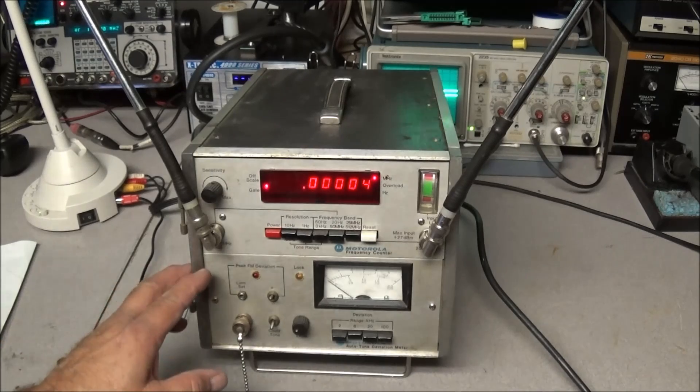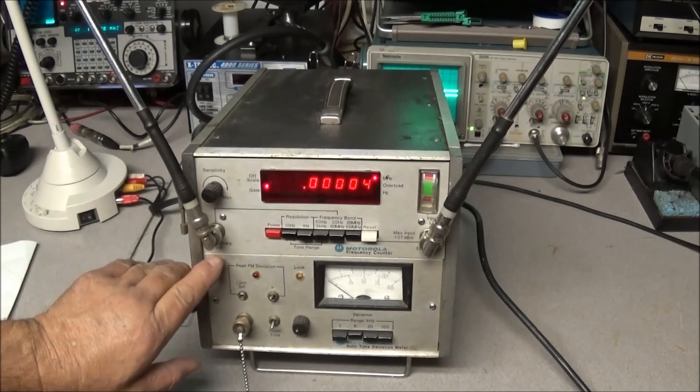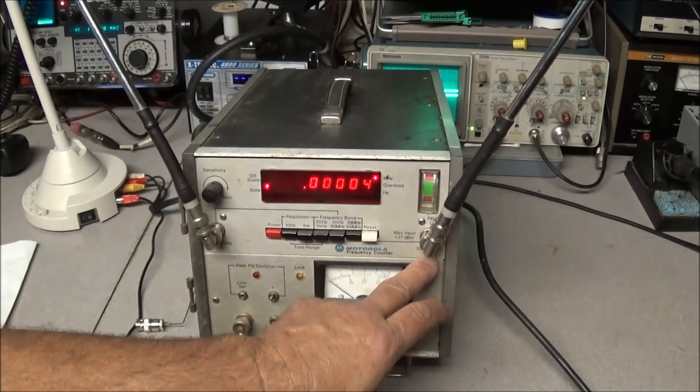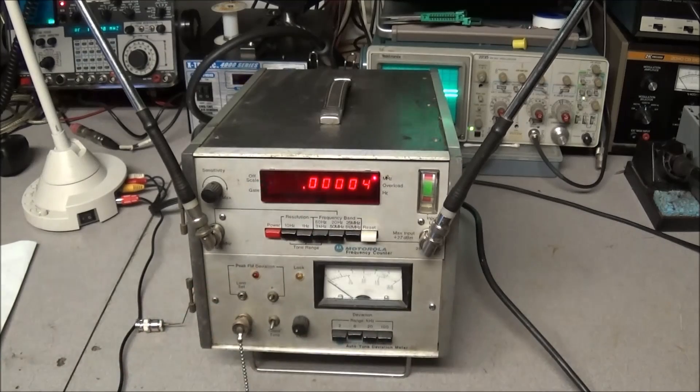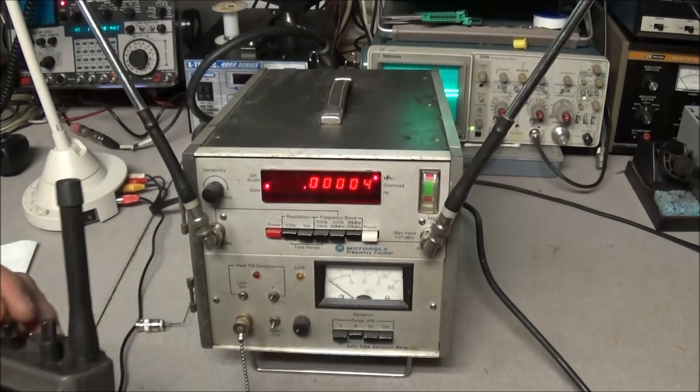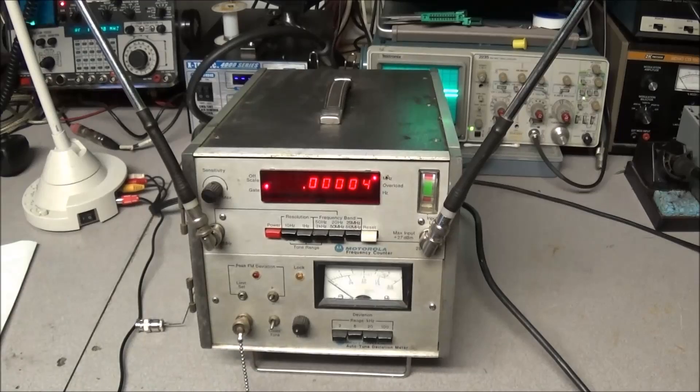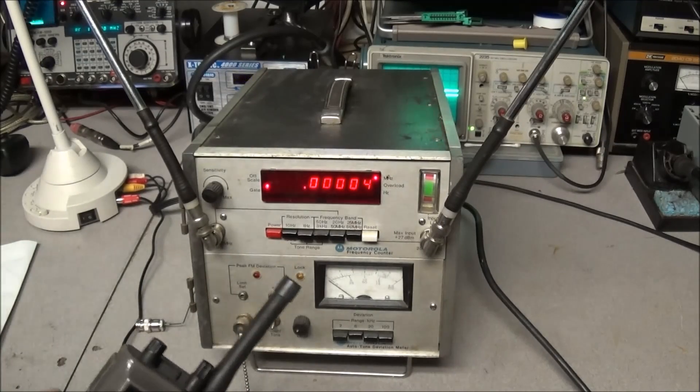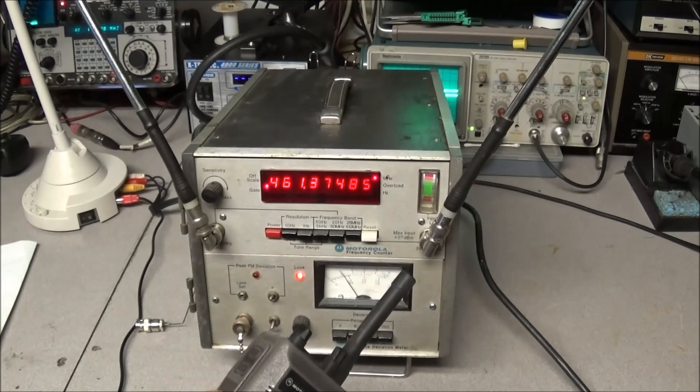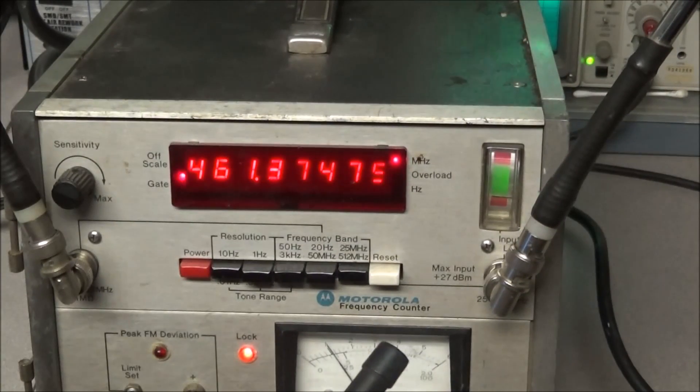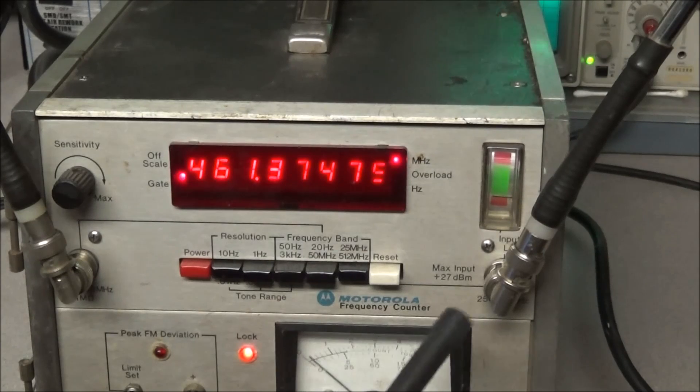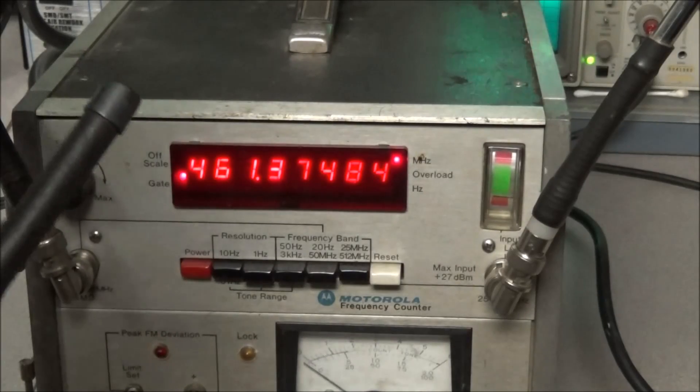You got two different inputs - you got 20 hertz to 50 megahertz and 25 megahertz to 512 megahertz on one side, and you can switch between the two. I'll grab a handheld radio - I've got a Motorola HT-600 that I'm working on. We'll key it up, go off repeater into simplex mode, and we have a frequency of 461.374, should be 375, and we also see our CTCSS tone of one kilohertz.